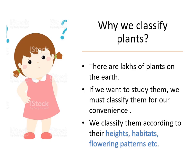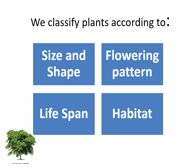Don't get confused — classification will help you here. Classification is necessary to avoid confusion. We classify plants into different categories using criteria such as their height, size and shape, their habitats, and their flowering patterns. We will classify plants basically according to their size and shape, their flowering patterns, then depending on their lifespan, and finally depending on their habitat — where do they grow.